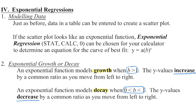It's going to be an exponential decay function if b is between zero and one. Remember, b can never equal zero, it can never equal one, and it also cannot be a negative number. So if b is greater than zero but less than one, it's a decay function, and as we move from left to right on the graph, those y values are decreasing — basically falling as we move from left to right.